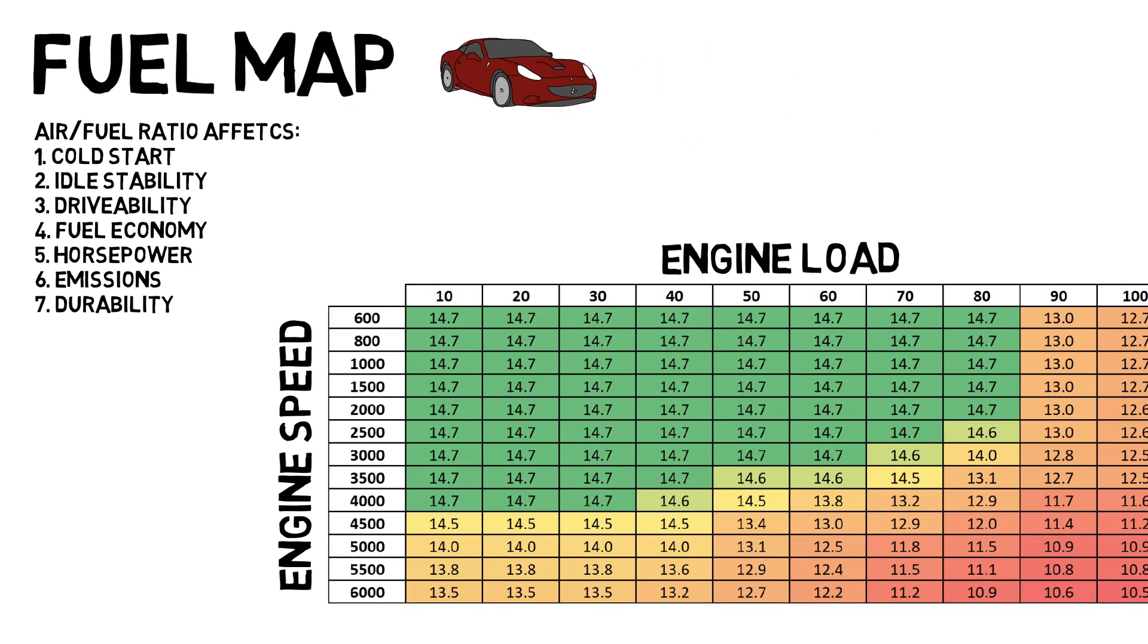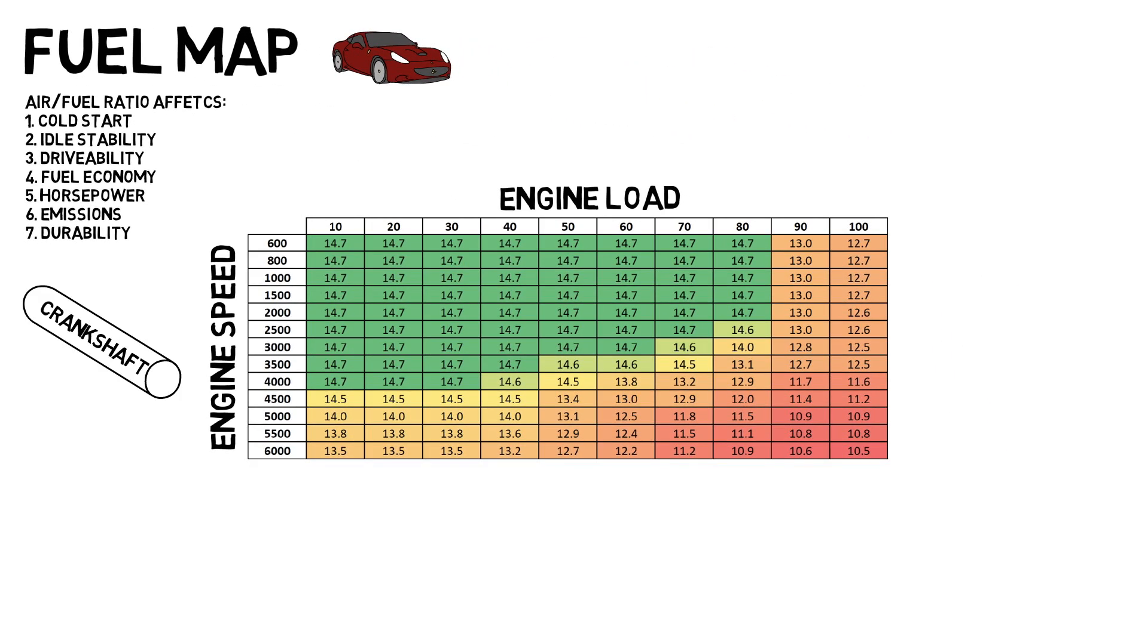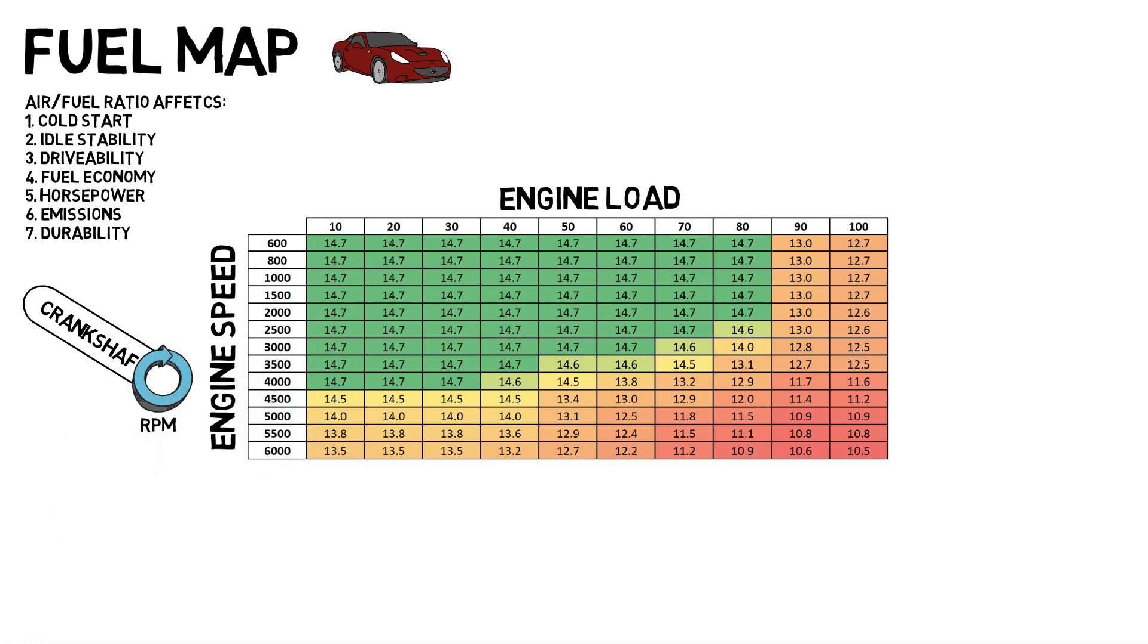Back to the map. Engine speed measures how fast the crankshaft spins and is denoted in revolutions per minute. Engine load is the percentage of the measured intake air compared to the theoretical maximum.